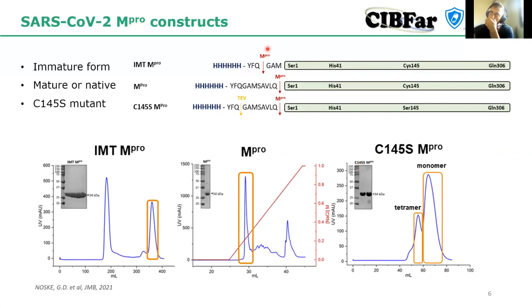To do so, we produced three forms of the protein. One form we call the immature form — immature M-pro — which contains non-cleavable elements at the N-terminal of the protein. There are three amino acids that cannot be cleaved by the protein and cannot be removed by itself.